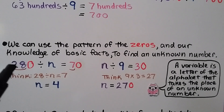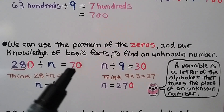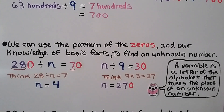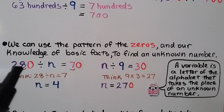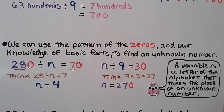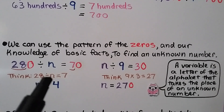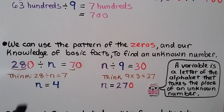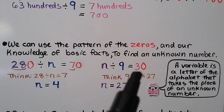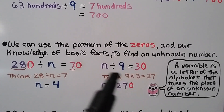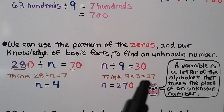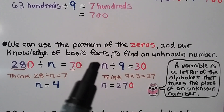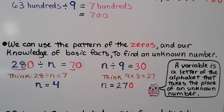Here we have 280 divided by n equals 70. The variable n takes the place of an unknown number. We think: 28 divided by some number equals 7. Since 7 times 4 is 28, n equals 4. For n divided by 9 equals 30, we think 9 times 3 is 27, and since the quotient has a zero, the dividend must also have a zero — so n must be 270.